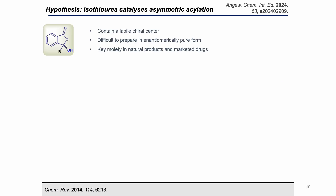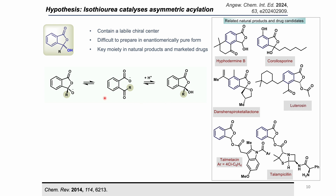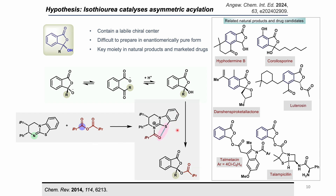The hypothesis of the project was to develop a DKR method for the challenging tetrasubstituted systems using our Hyper-BTM isothiurea catalysis. We chose 3-hydroxyphthalide because it contains a labile chiral center and these are key motifs in various natural products and drug candidates. We aimed to utilize the ring-opening/ring-closing mode of racemization to achieve DKR in these fully substituted phthalate systems, where the catalyst reacts with the anhydride to form an acyl ammonium intermediate, which then reacts with the alcohol to form the enantio-enriched acylated product.